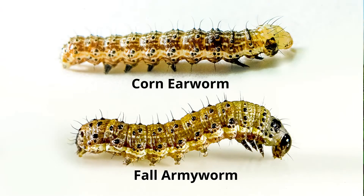They both have similar colors and similar stripes along their backs. They also have four pairs of abdominal prolegs and they both have black micro spines. This is important to know so that you don't misidentify, but there are some true differentiating factors between the two.